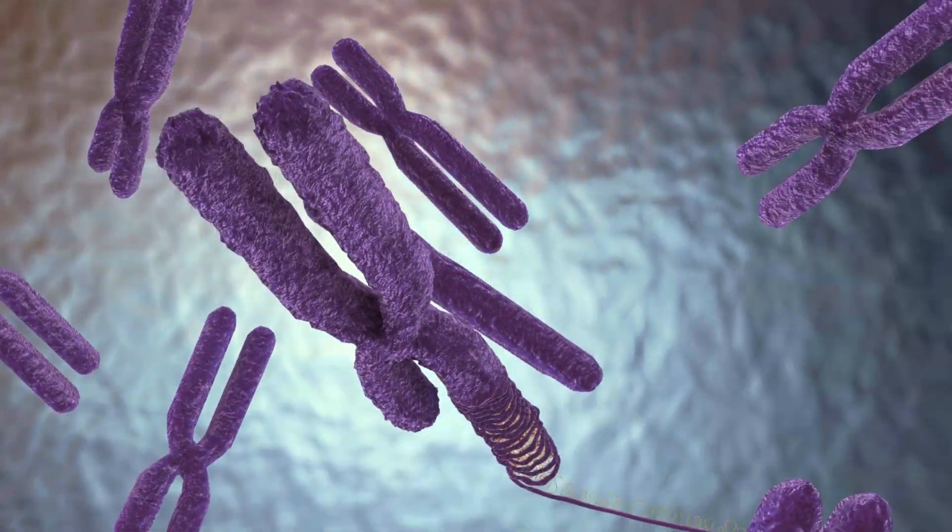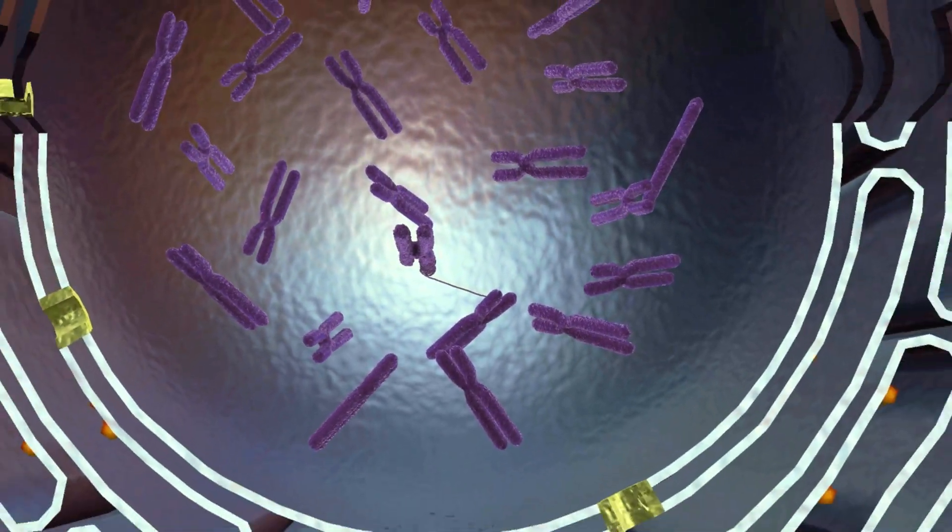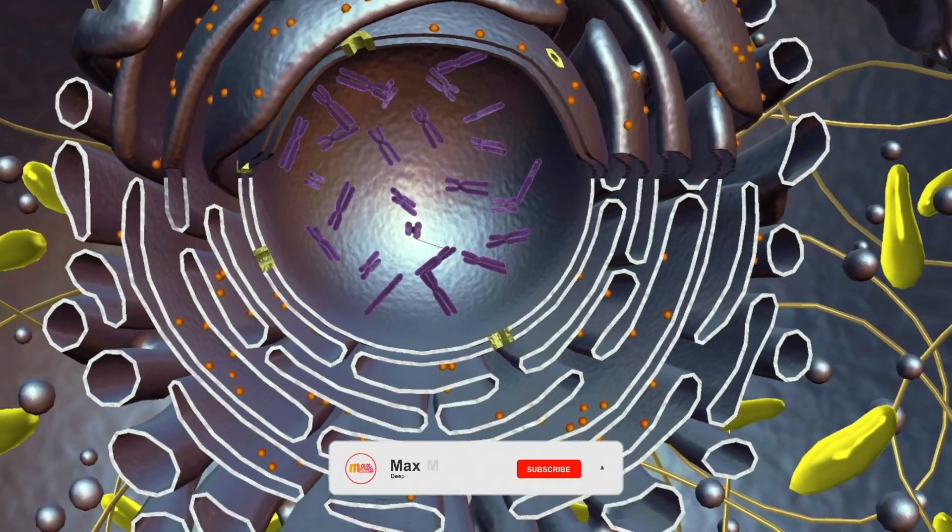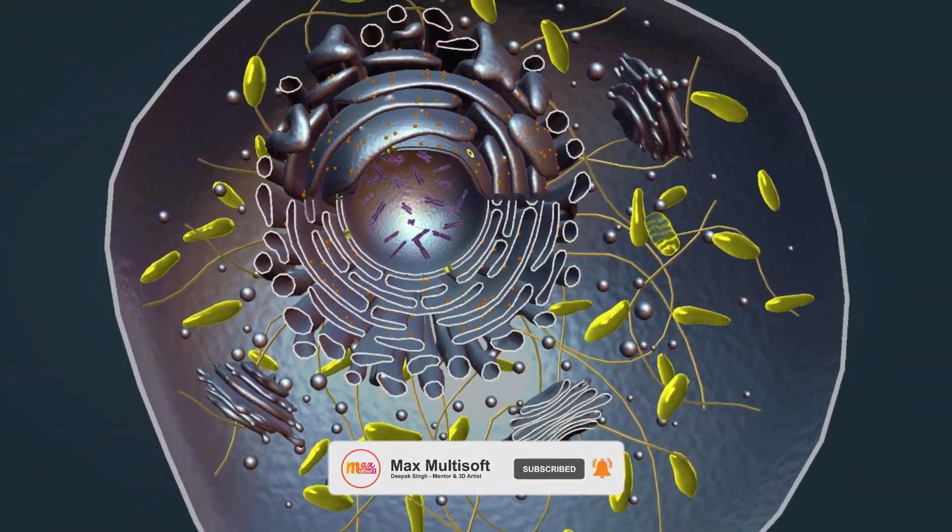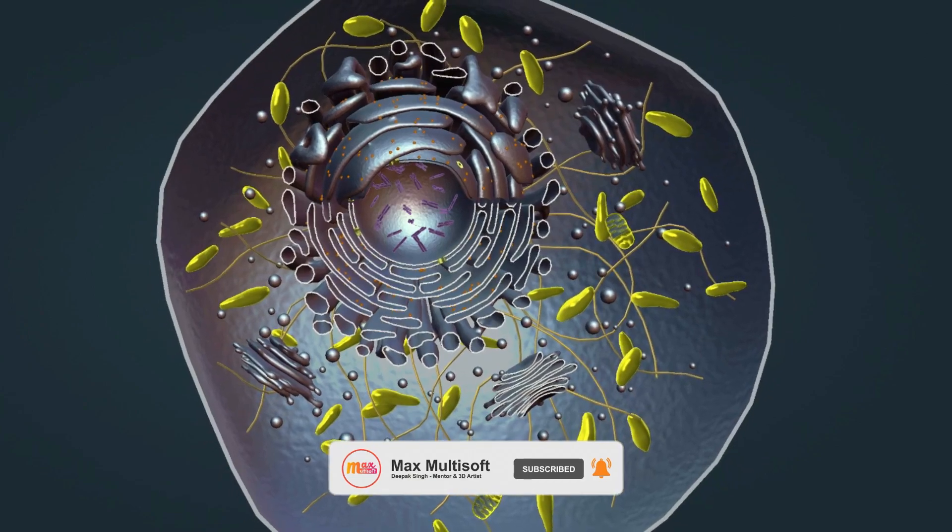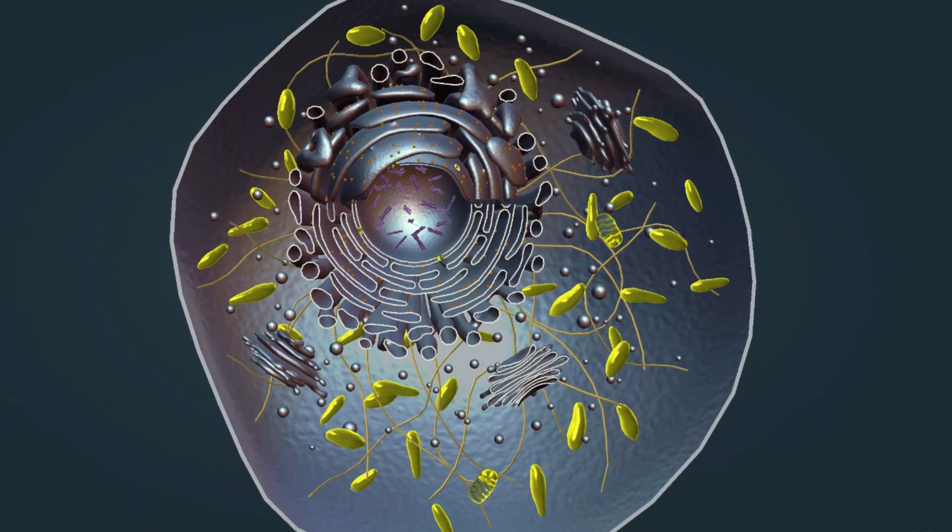Human cells have 46 of these, with a total of nearly 2 meters of DNA. Each of the microscopic chromosomes contains 4 centimeters of DNA on average.